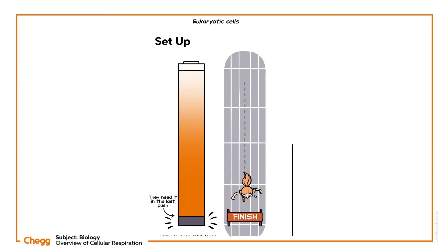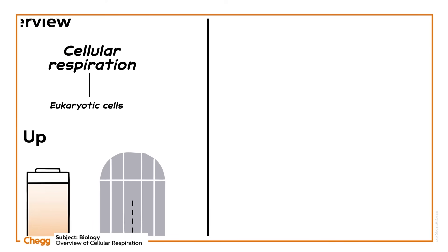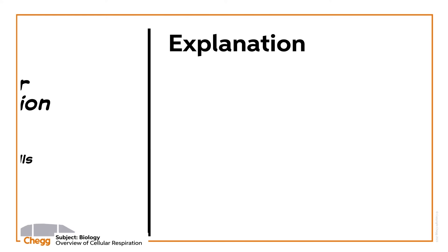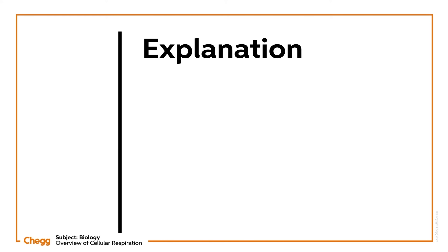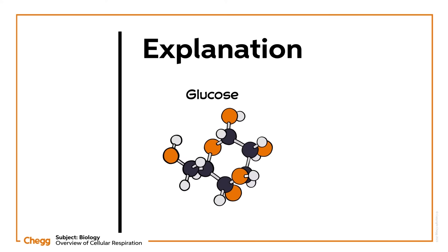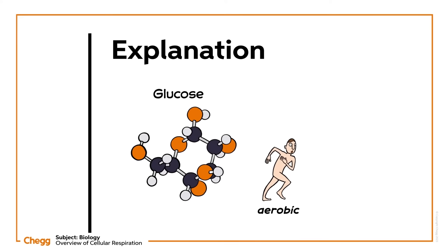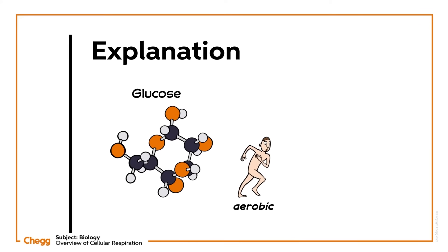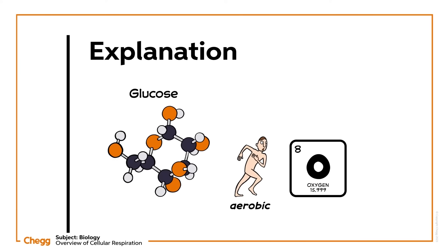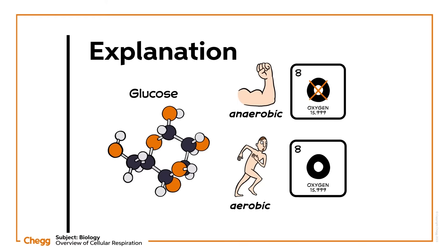ATP is created by a process called cellular respiration, a process of breaking down glucose into simpler carbohydrates. Cellular respiration happens in two categories: there is aerobic respiration, which occurs in the presence of oxygen, and there is anaerobic, which occurs without oxygen.